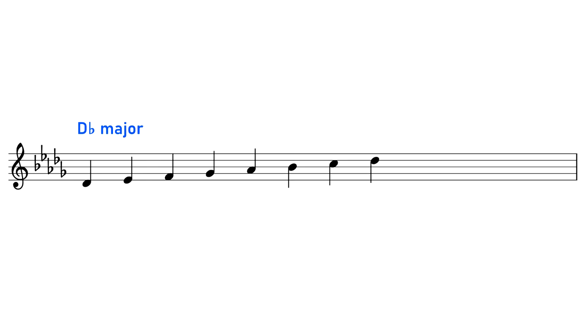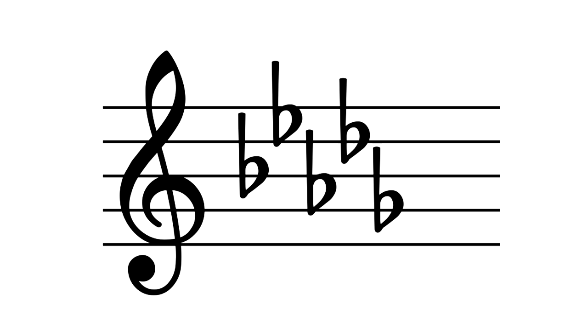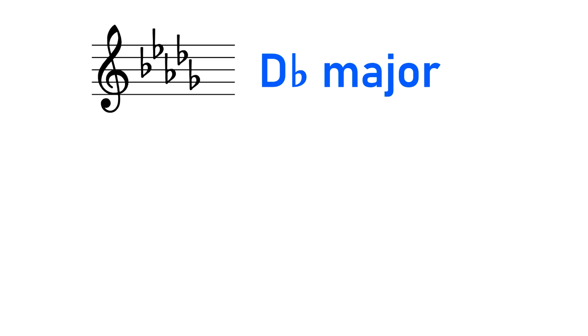Because Ab Mixolydian is a mode of Db major, they both use the exact same 7 notes, and therefore can use the exact same key signature. But this can sometimes lead to some confusion. For example, on the Music Notes page for All Night Long, it describes the song as being in Db major, not Ab Mixolydian, because it uses a Db major key signature.